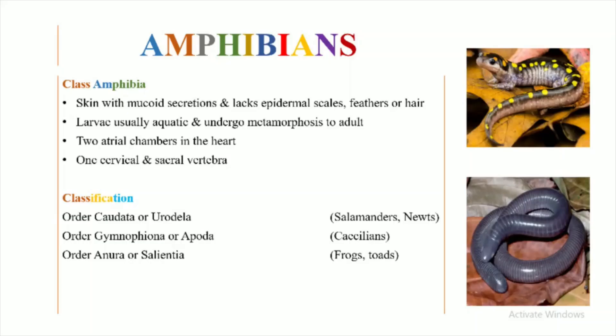In this video we will discuss the classification of amphibians. Class Amphibia includes the reptiles that have skin that produces mucoid secretions and lacks epidermal scales, feathers or hair. Their larvae are usually aquatic and they undergo the process of metamorphosis to become adults.